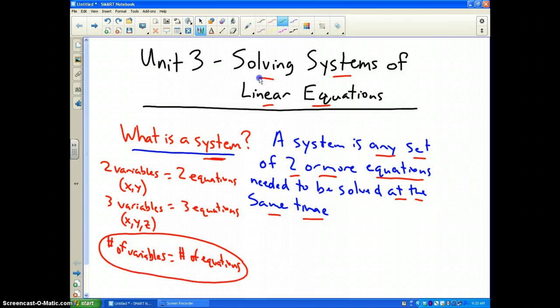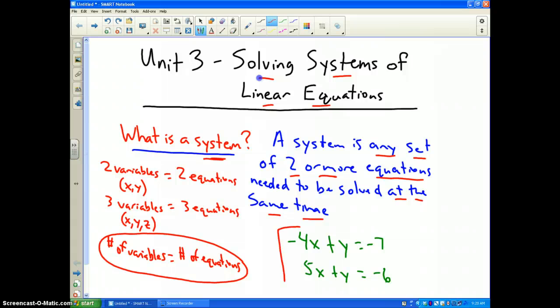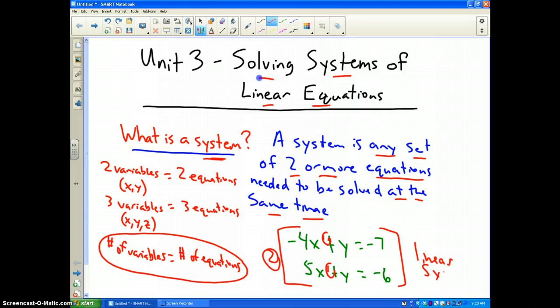An example of a system of equations would be this. This is what we are going to work with during this video. Negative 4x plus y equals negative 7 and 5x plus y equals negative 6. This is an example of a system of equations because we have two of them and they are both linear because the highest power of x is 1 in both cases. These two equations form a linear system.